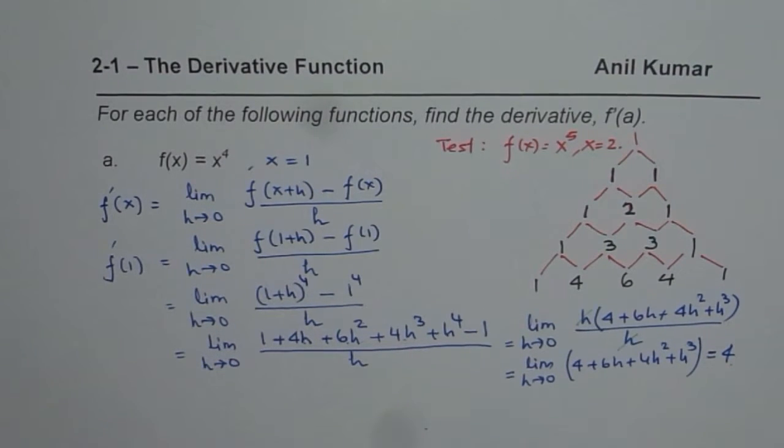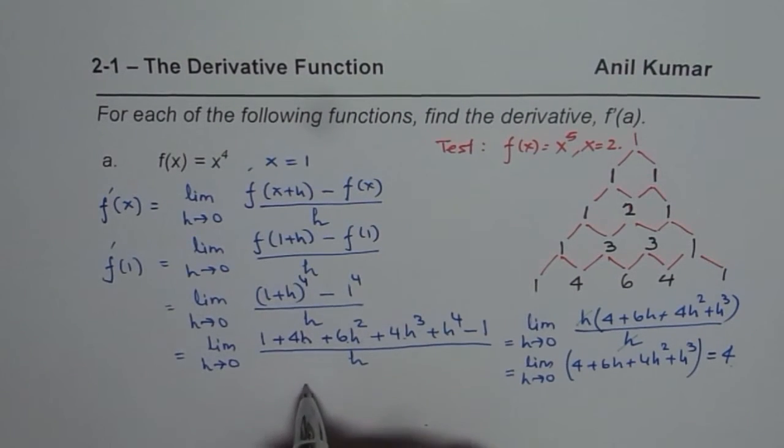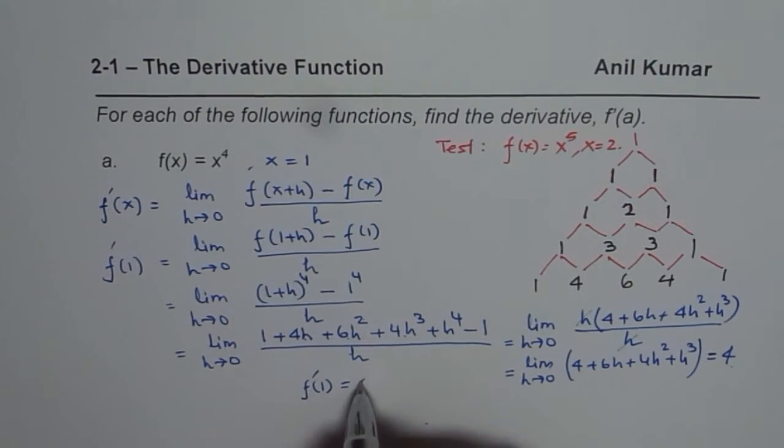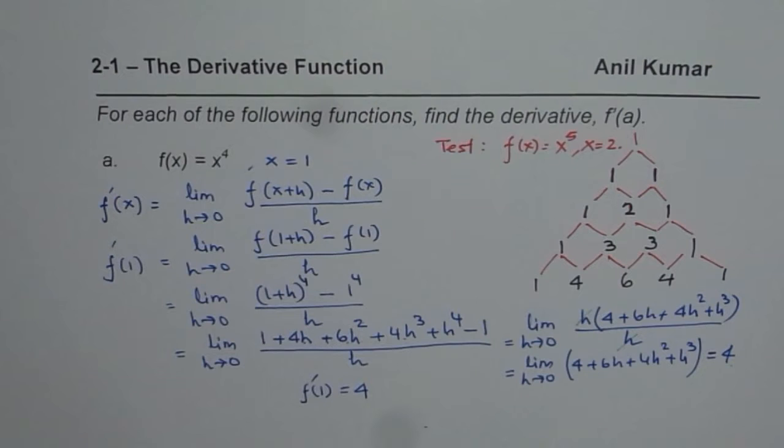So that is my answer, 4. So the limit of this function, let me write down here, answer f dash for this function at 1 equals 4. Perfect. So that is how we are going to solve it. And this is the solution for the present question.